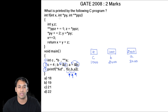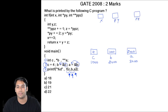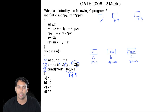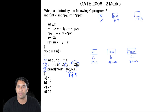Now these values will be copied into this function. In this function, we are having three variables: x, py, and ppz. Because C uses call by value, the value in c will be copied into x, the value stored in b will be copied into py, and the value stored in a will be copied into ppz. So when we call this function, x = 4, py = 1000, and ppz = 2000.